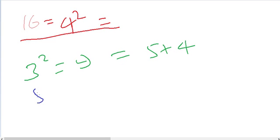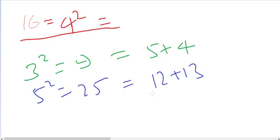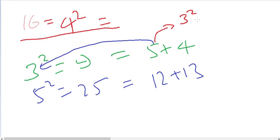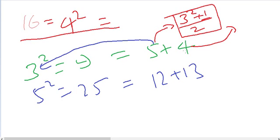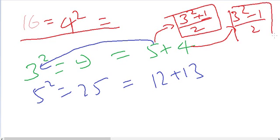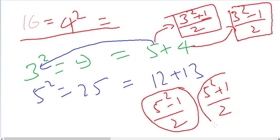9 can be written as two consecutive natural numbers: 5 plus 4. Take another odd number, 5. 5 squared is 25, and 25 can be written as 12 plus 13, which are two consecutive numbers. The relation is: 5 is (3²+1)/2 = 10/2 = 5, and 4 is (3²-1)/2 = 8/2 = 4. Similarly, 12 is (5²-1)/2 and 13 is (5²+1)/2.